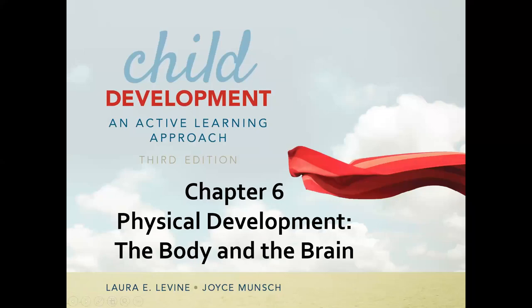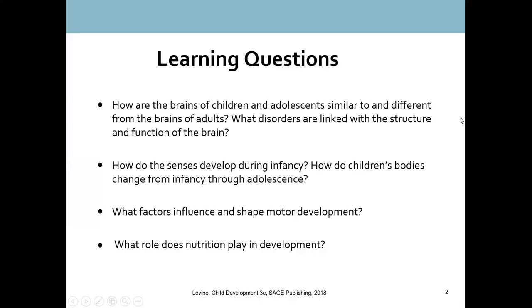Welcome to Chapter 6, Physical Development: the Body and the Brain. In this chapter, we will look at these learning questions: Are the brains of children and adolescents similar to and different from the brains of adults? What disorders are linked with the structure and function of the brain? How do the senses develop during infancy? How do children's bodies change from infancy through adolescence? What factors influence and shape motor development? And what role does nutrition play in development? There will be a total of five videos in this chapter.